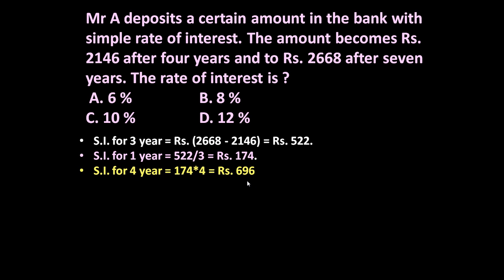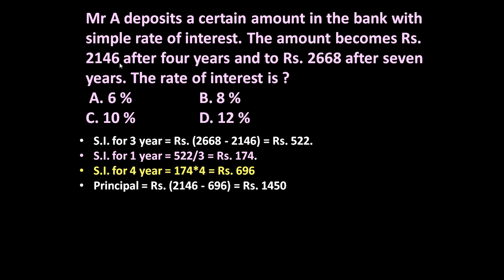So after 4 years he will receive Rs 696 as interest. The principal amount will be equal to 2146 minus 696, because 2146 is the principal plus interest after 4 years. So 2146 minus 696 is equal to Rs 1450. This is the principal amount which he deposited in the bank.